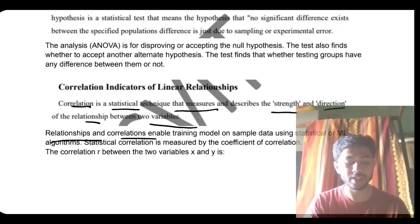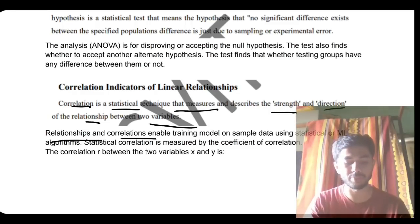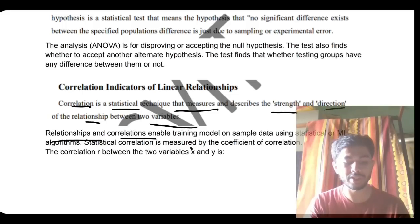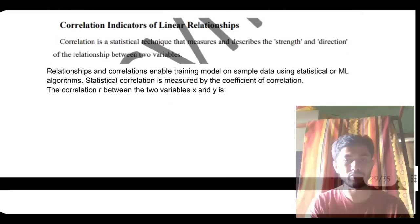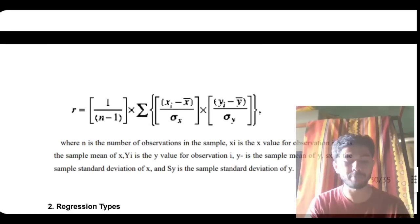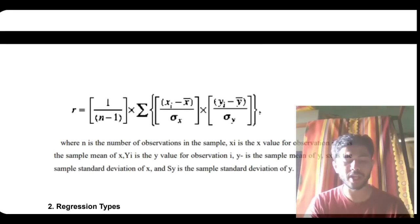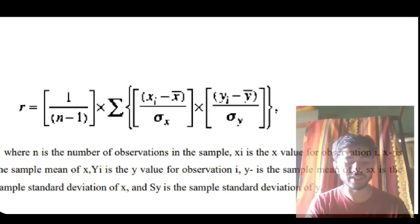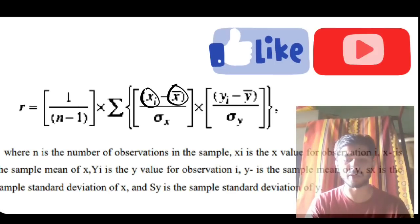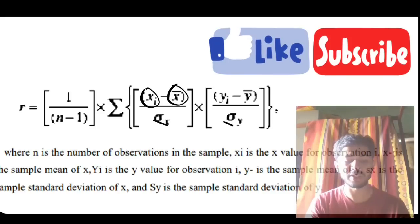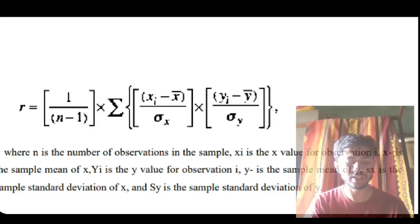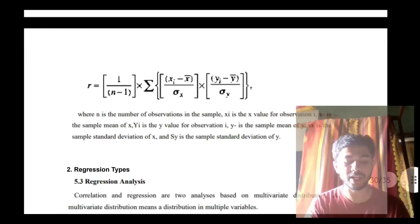Correlation is a statistical technique that measures and describes the strength and direction of the relationship between two variables. To calculate the correlation between variables x and y, it is depicted by r. The formula is: r = (1 / (n−1)) × Σ [(x − x̄)/σx × (y − ȳ)/σy]. Go through the definitions of these terms in the document.